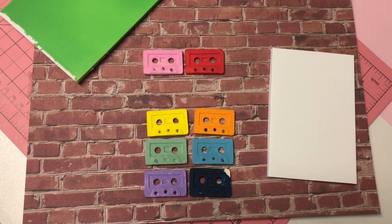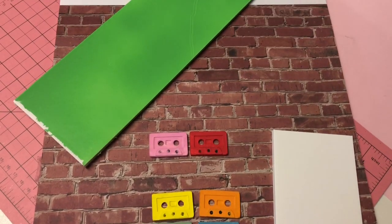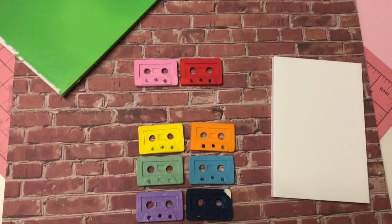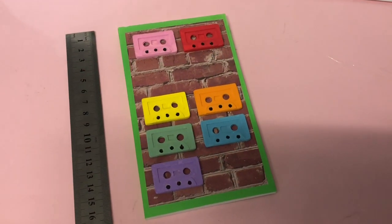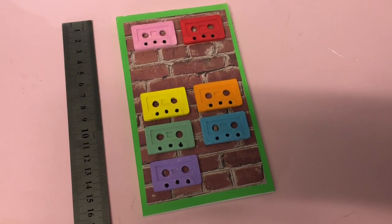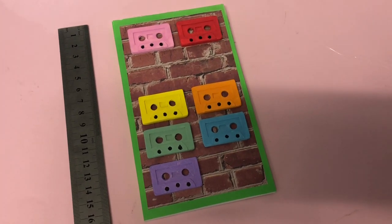To make a simple 80s themed wall art, cut foam board or cardboard into a 10x16cm rectangle. Cover with brick scrapbook paper, then arrange the cassettes in rainbow order.